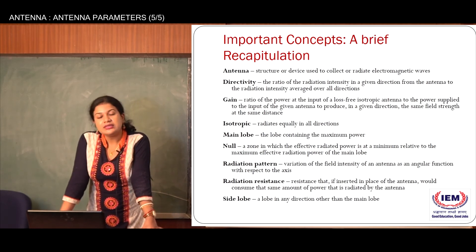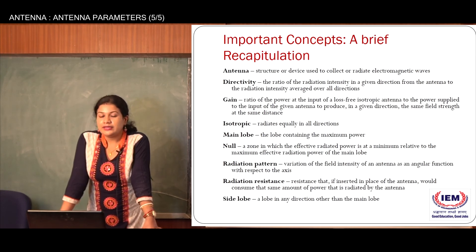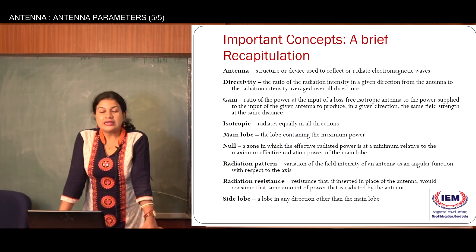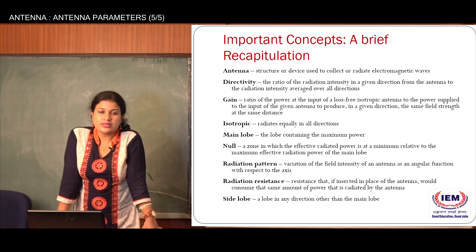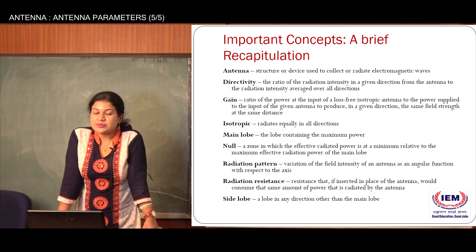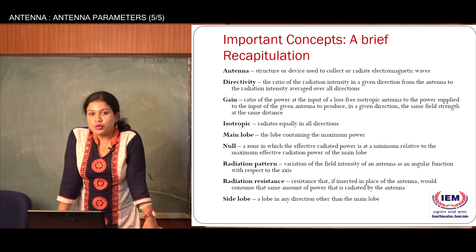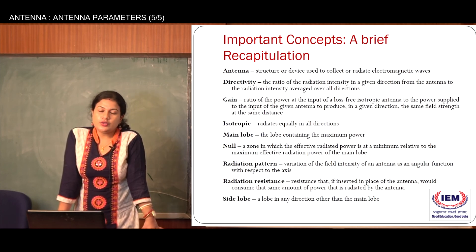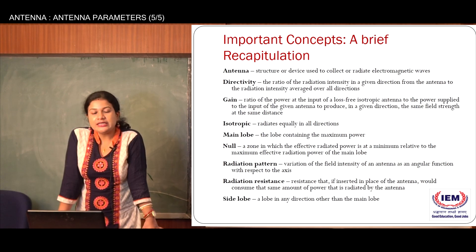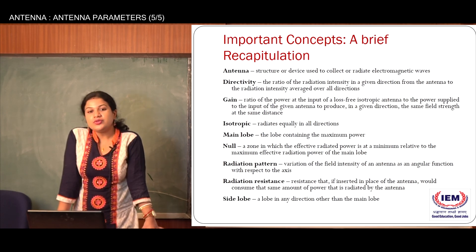We also discussed the side lobe, which is the minor lobe — the direction in which the antenna radiates less than the maximum power. It is essentially a side radiation of the antenna. Additionally, we covered different practical antennas and the different modes of antenna propagation — how electromagnetic waves travel from the transmitter to the receiver.